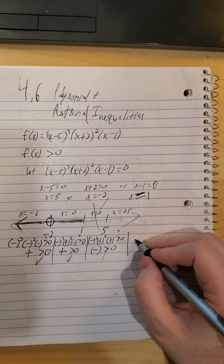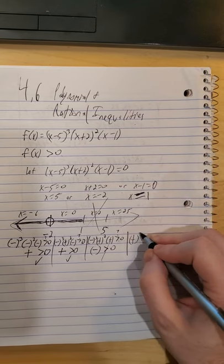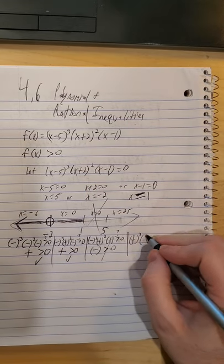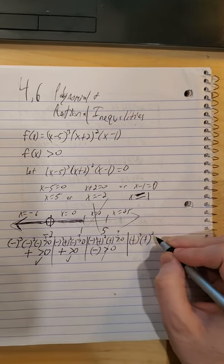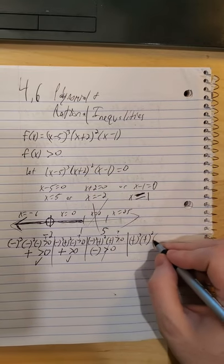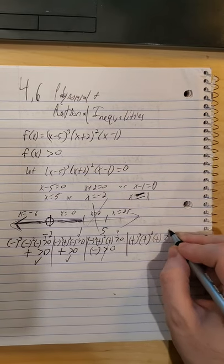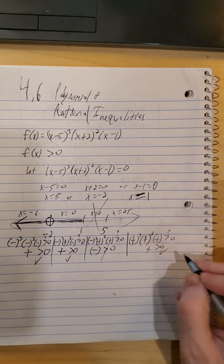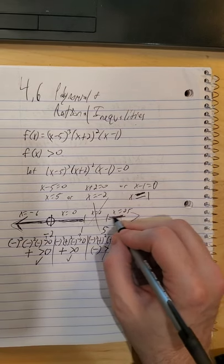So finally the 25. 25 minus 5 is positive and we're cubing it. 25 plus 2 positive, happens to be 27, but you just care about the sign. 25 minus 1 is also positive. And we want to know if this is bigger than 0. Well sure enough, positive greater than 0 is true. We want this section of the graph as well.